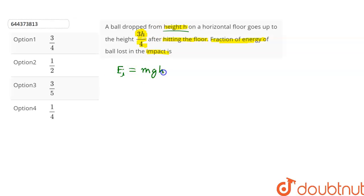to mg times the height, which is h. After hitting the floor, the ball goes to a height of 3h/4. Let that height be h'. It is equal to 3h/4. As the mass